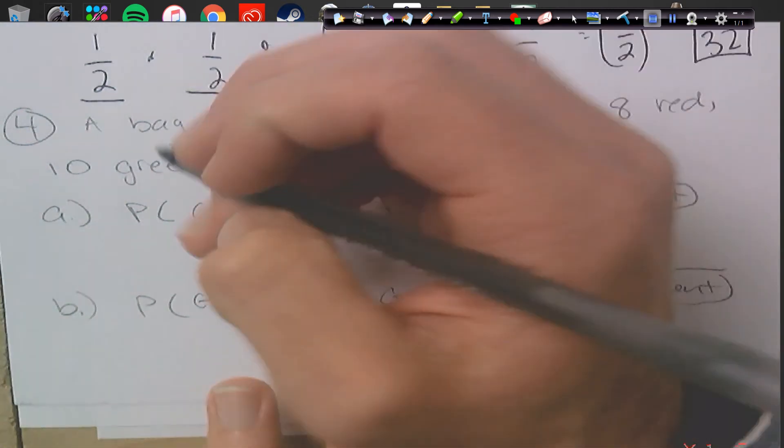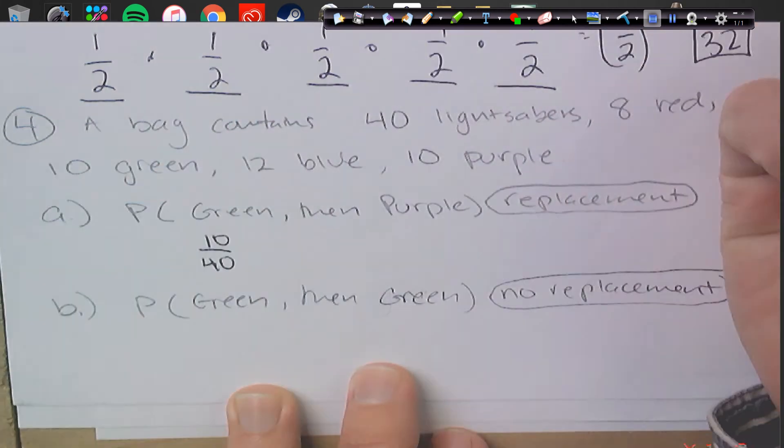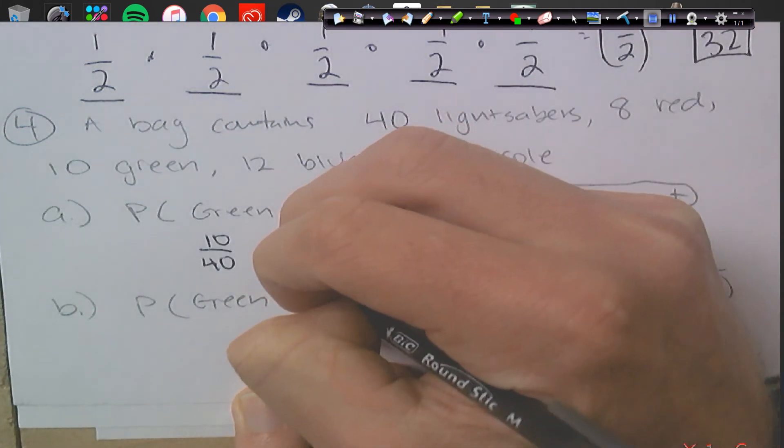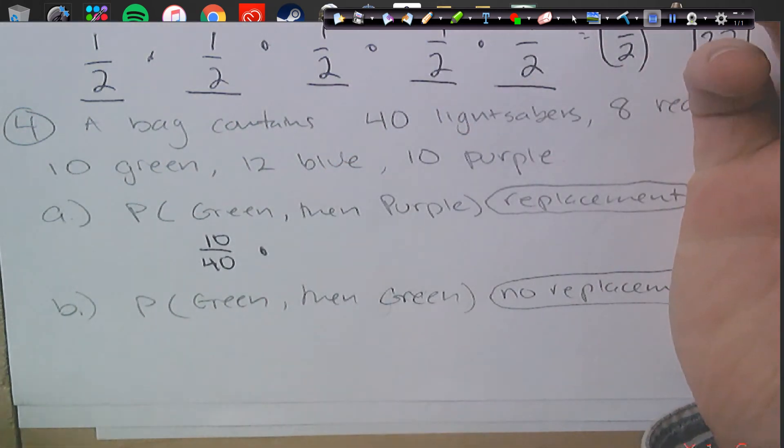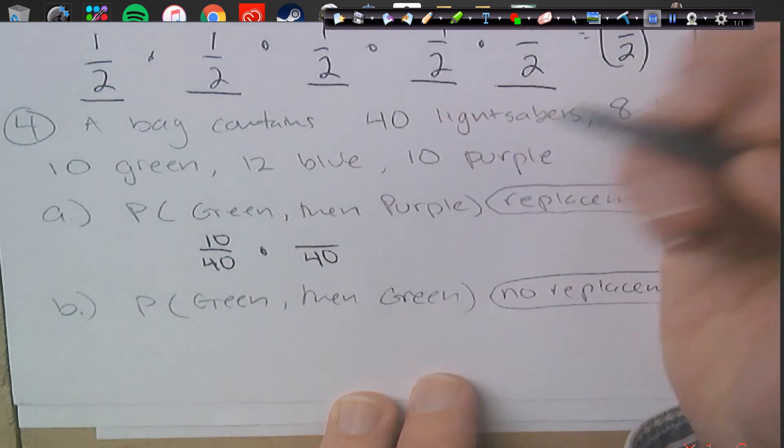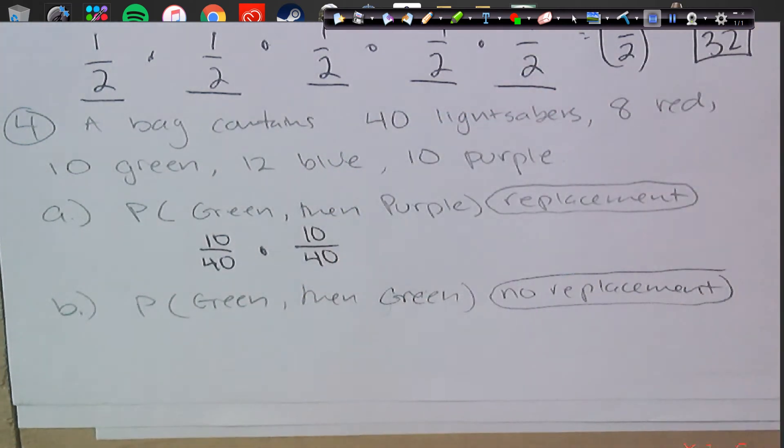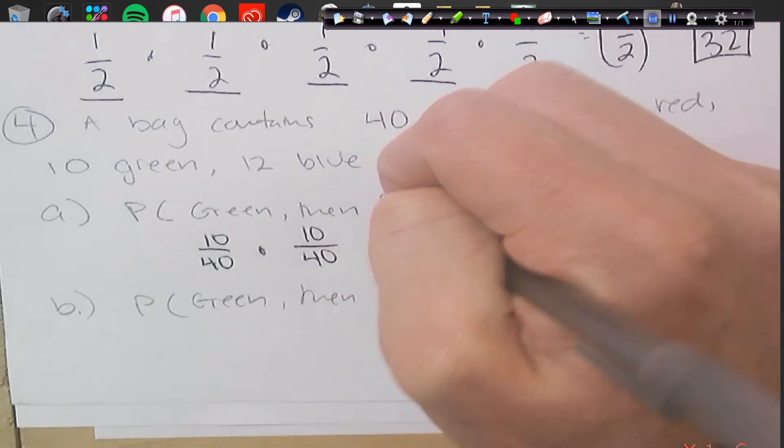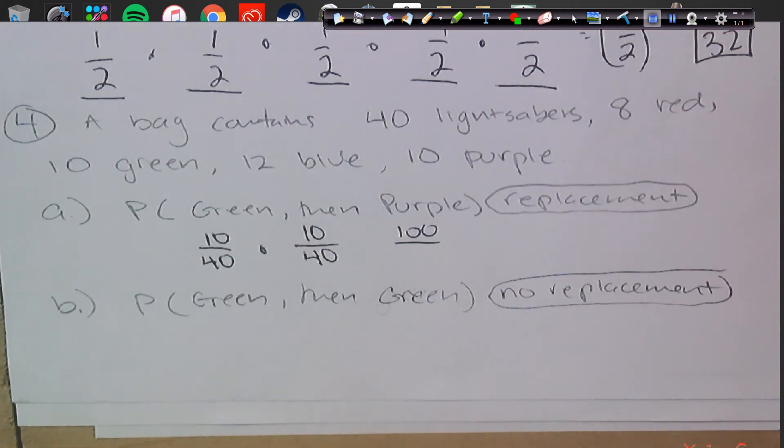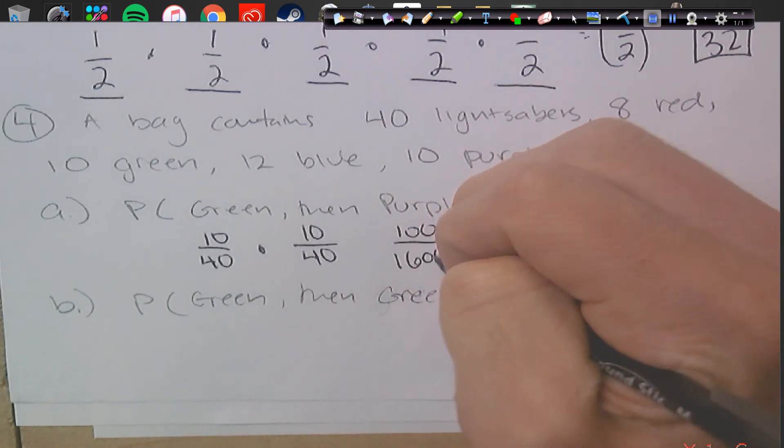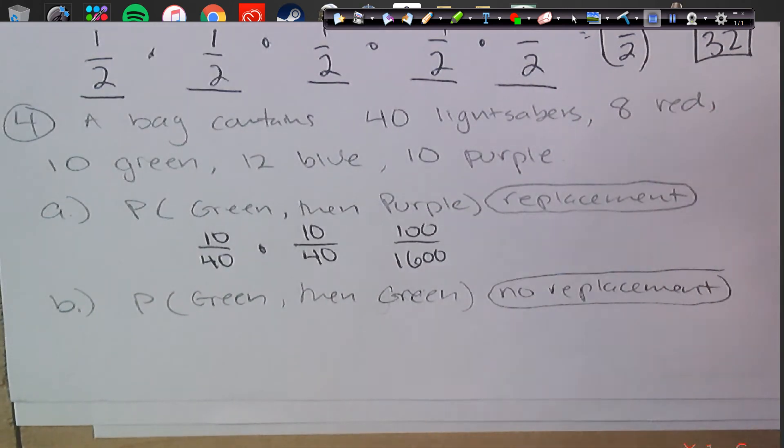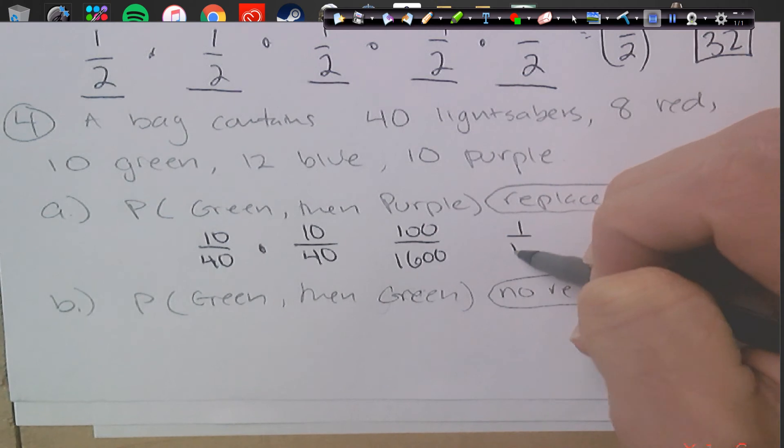So there are 10 out of 40 green. Then I'm going to grab a purple, I put it back so I still have 40, and there is 10 purple. So again, we're going to use our calculator here, 10 times 10, which we could have done in our head. And 40 times 40, which we could have even done that in our head. And if we actually reduce this, the zeros will reduce out to 1 over 16.